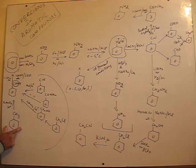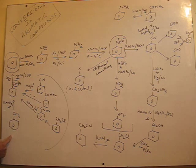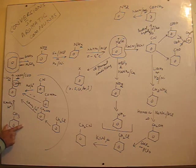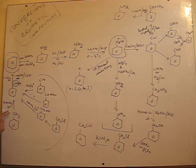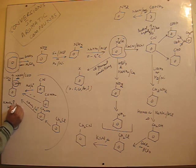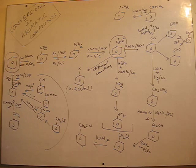Going back, benzoic acid can be prepared by four different methods. Toluene — any alkyl group, whether it is an ethyl group or propyl group — if it is oxidized using hot acidic KMnO4 solution, it gets converted into carboxylic acid. So you can have a good conversion: toluene to benzene.